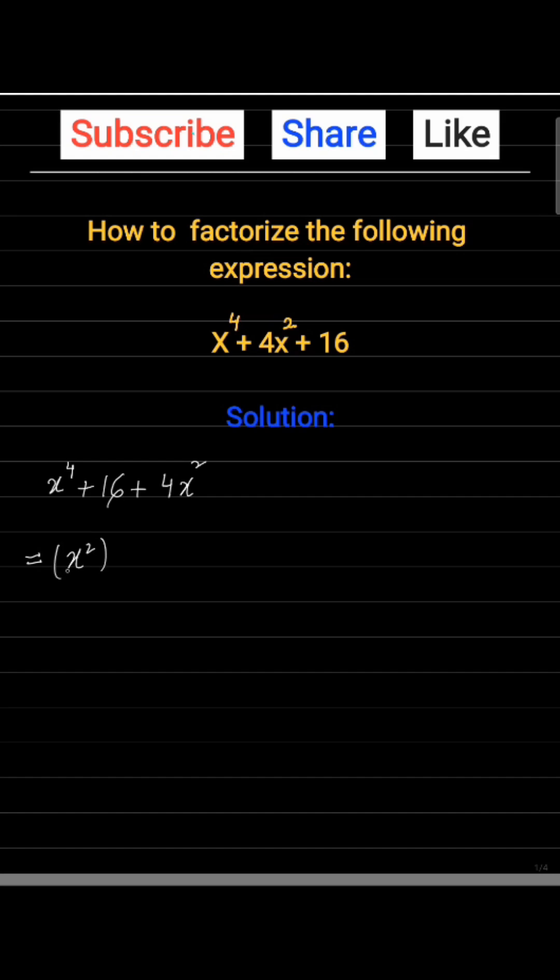It can be rewritten as (x²)² plus 4² plus 4x². Now we will take the first two terms and complete the square.